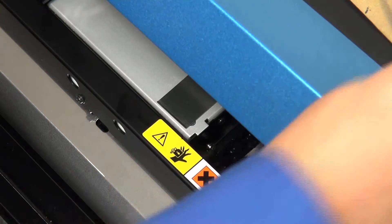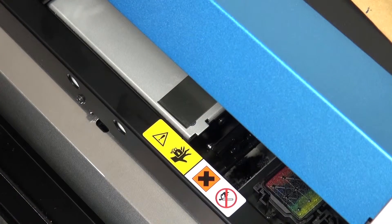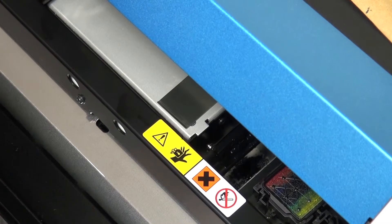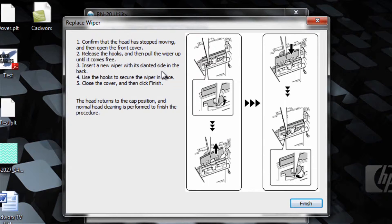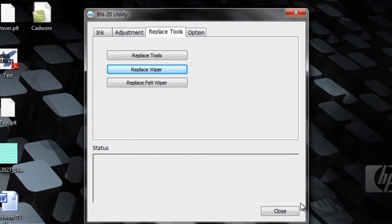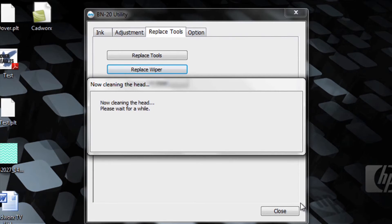Once the wiper assembly is secured, close the front panel. Return to the BN20 utility in Windows. Click finish and it will return to the replace tools tab. You've successfully replaced the wiper. The machine will now complete a normal cleaning cycle.